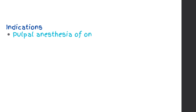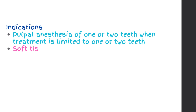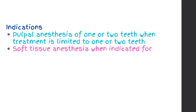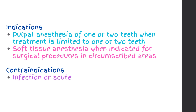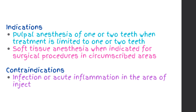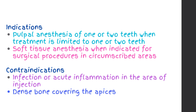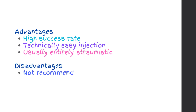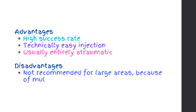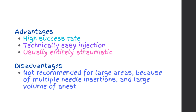Indications: pulpal anesthesia of one or two teeth when treatment is limited to one or two teeth; soft tissue anesthesia when indicated for surgical procedures in circumscribed areas. Contraindications: infection or acute inflammation in the area of injection; dense bone covering the apices of teeth. Advantages: high success rate, technically easy injection, usually entirely atraumatic. Disadvantages: not recommended for large areas because of multiple needle insertions and large volume of anesthetic solution deposition.